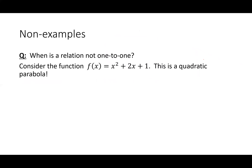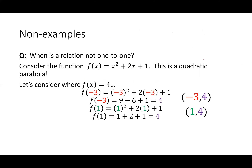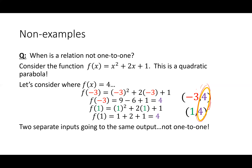So when is a relation not one-to-one? Consider this quadratic parabola. When f(x) — that means my y value — is equal to 4, I get two different possible inputs. If I put in x = −3 and x = 1, I get 4 as an output for both. So two different inputs give one output — this is problematic. This function is absolutely not one-to-one.